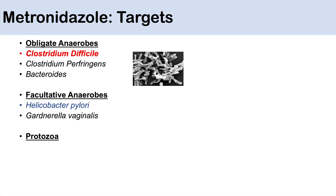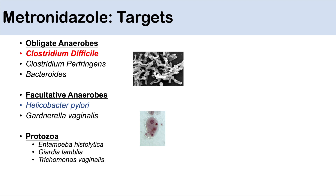You can also have some activity against facultative anaerobes such as Helicobacter pylori and Gardnerella vaginalis. Some other targets include protozoa, which include Entamoeba histolytica, Giardia lamblia, and Trichomonas vaginalis. The key thing to take from this is that metronidazole is not effective against aerobes — it's only used for anaerobes and some protozoa, particularly the obligate anaerobes. The biggest target to remember is Clostridium difficile.